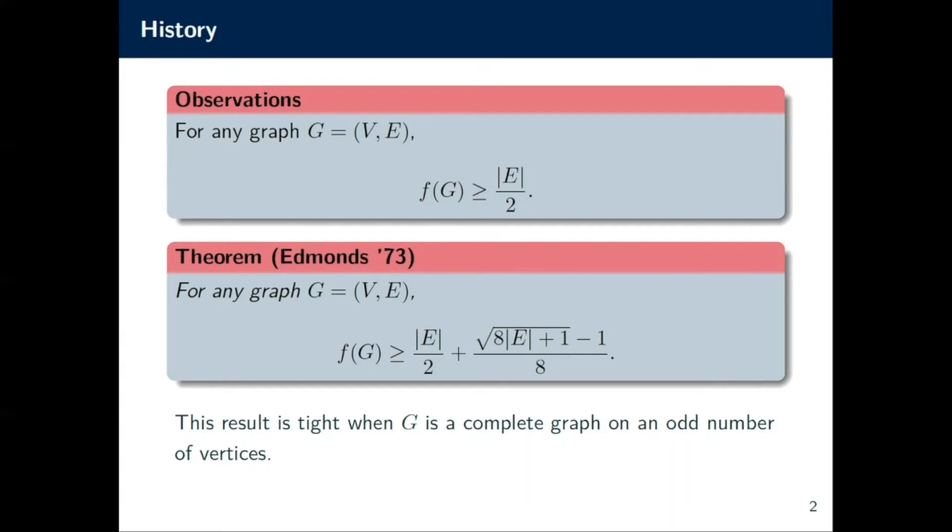This can actually be improved for arbitrary graphs to |E|/2 + (√(8|E|+1) - 1)/8, a result of Edmonds in '73. This result is tight for any complete graph with an odd number of vertices, that is, any graph with an odd number of vertices such that every two vertices share an edge.